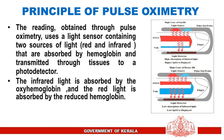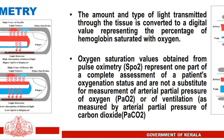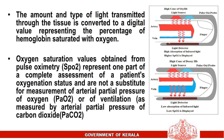Principle of pulse oximetry: the reading obtained through pulse oximetry uses a light sensor containing two sources of light — red and infrared — that are absorbed by hemoglobin and transmitted through tissues to a photo detector. The infrared light is absorbed by the oxy-hemoglobin and the red light is absorbed by the reduced hemoglobin. The amount and type of light transmitted through the tissue is converted to a digital value representing the percentage of hemoglobin saturated with oxygen.